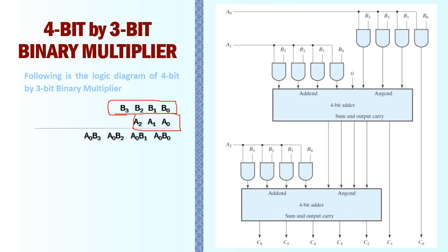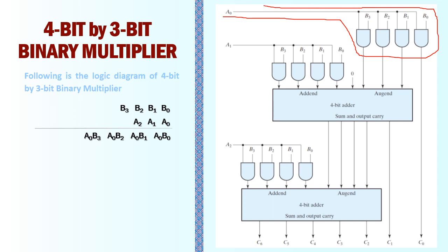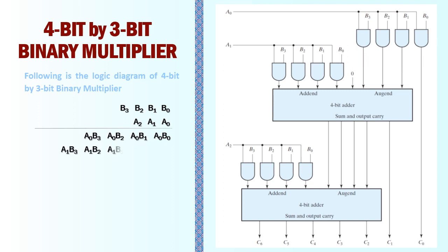Initially we form the partial product of A0 with all bits of B: A0B0, A0B1, A0B2, and A0B3. This partial product is implemented with AND gates — A0 is ANDed with all bits of B. Then we AND A1 with all bits of B to get A1B0, A1B1, A1B2, and A1B3, and this particular circuit carries out that partial product.